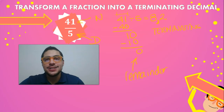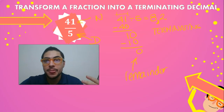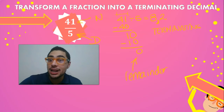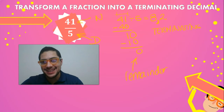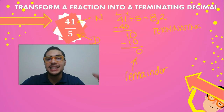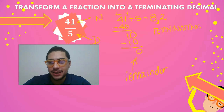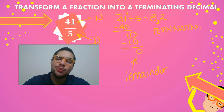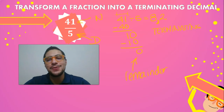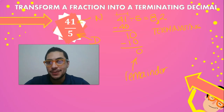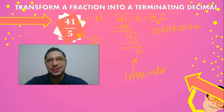That's pretty much it. In this practice we solved two problems — fractions that are rational numbers — and we transformed them into terminating decimals. So again: identify the numerator, the denominator, divide, and when you reach a remainder of 0, you know you are solving problems with terminating decimals. Feel free to rewatch the video and redo the practices, and I'll see you on the next one. Bye!